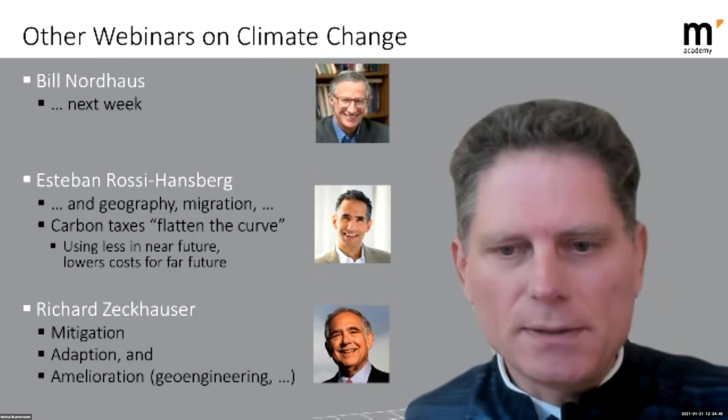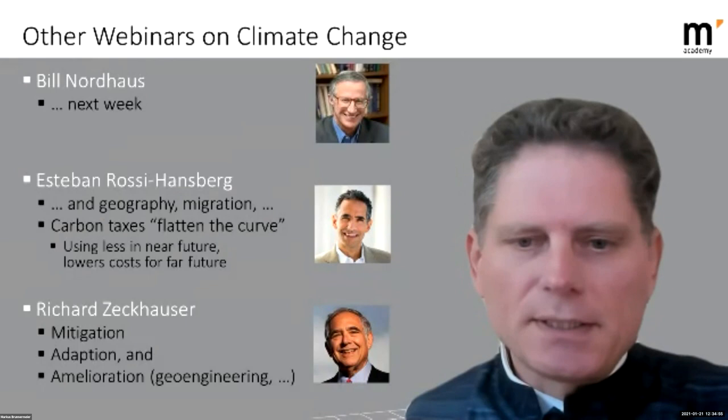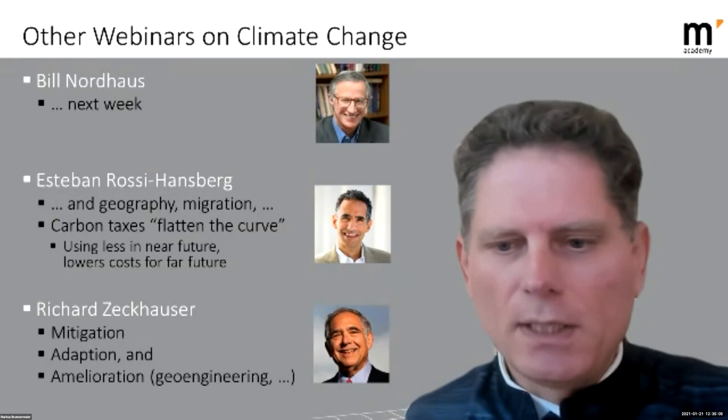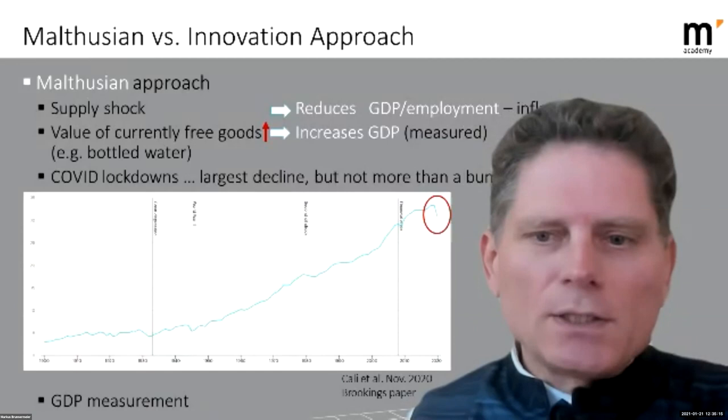In June we had Richard Zeckhauser from Harvard talking about the three different ways of dealing with climate change: mitigation, adaptation, and amelioration. In particular, he was favoring geoengineering. Today we will hear much more about how climate change interacts with the macroeconomy.